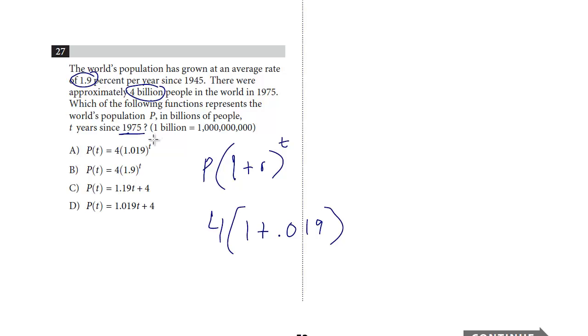And it's per year. And we want to know how many years. And it would just be to the T power. That's it. So not a hard question for number 27, just knowing your formula for exponential growth.